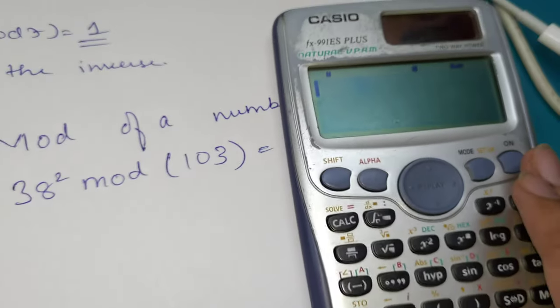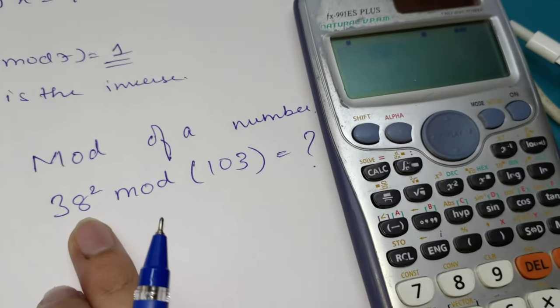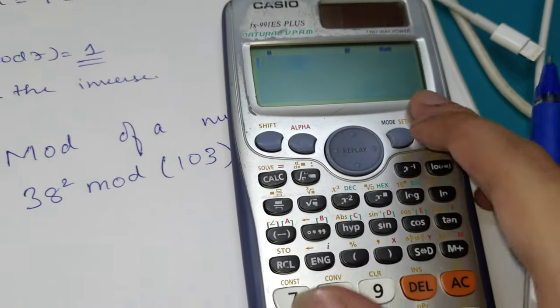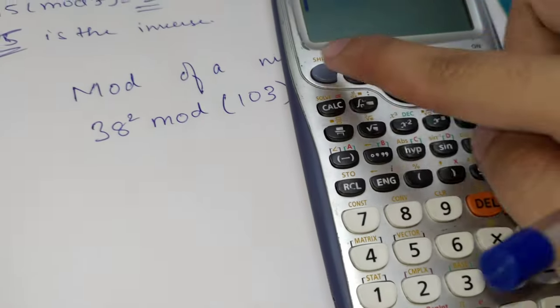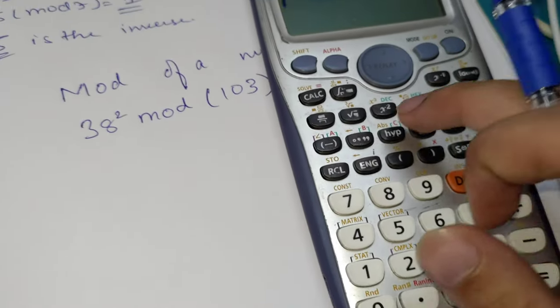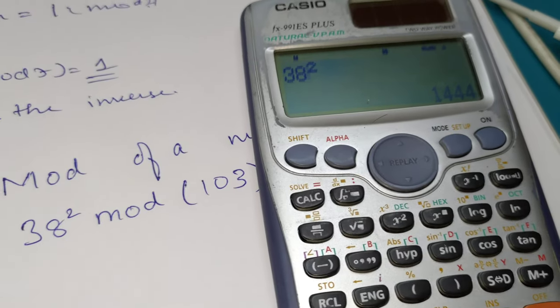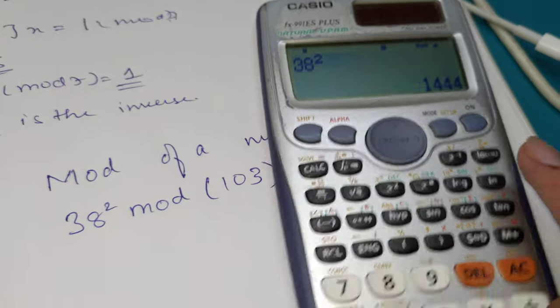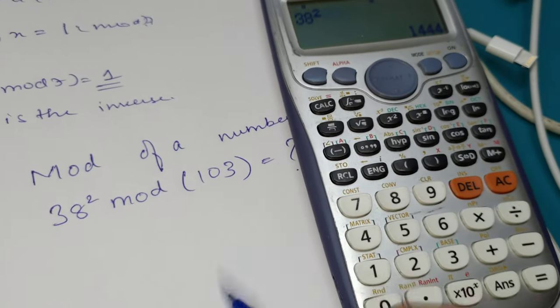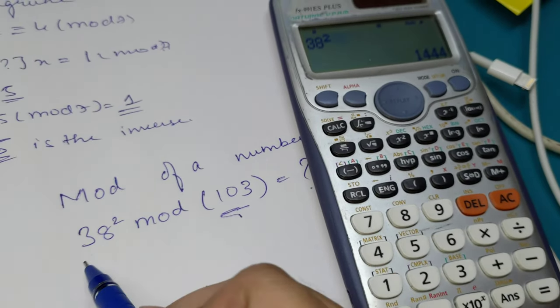It's pretty simple, you only need your calculator. First we need to find what is 38 square. So let's find it. Alright, 38 square is 1444.